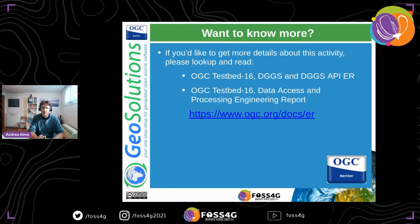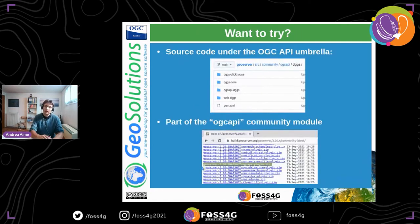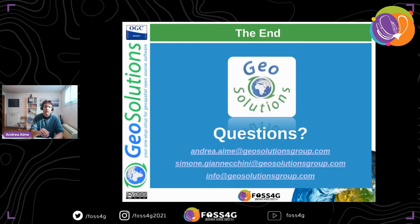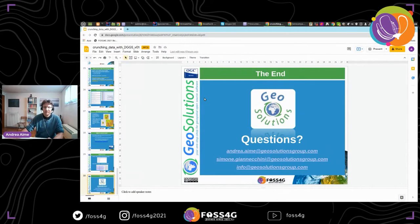If this is interesting to you, you can look at the engineering reports for DGGS and DGGS API at OGC — there are a couple of them — as well as the DAPA one, which also covers the DGGS flavor. If you want to try it out, the source code is under the OGC API community module umbrella in GeoServer, and the binary is also part of that module, which contains all the OGC APIs implemented so far.